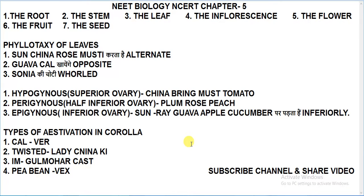Estivation in corolla has four types: valvate, twisted, imbricate, and vexillary. Gulmohar is an example of imbricate, and vexillary examples include pea and bean (P and P).